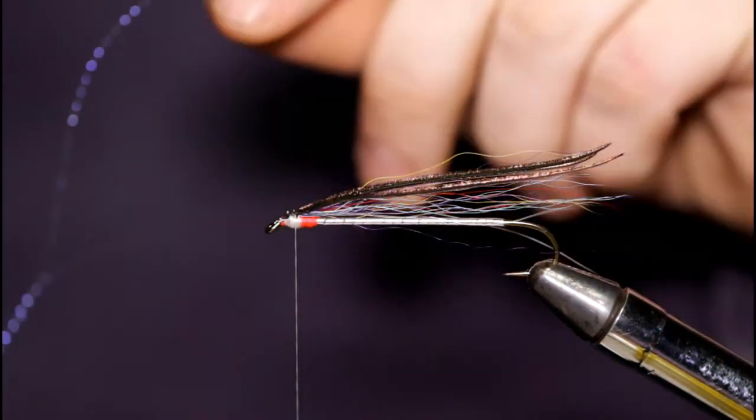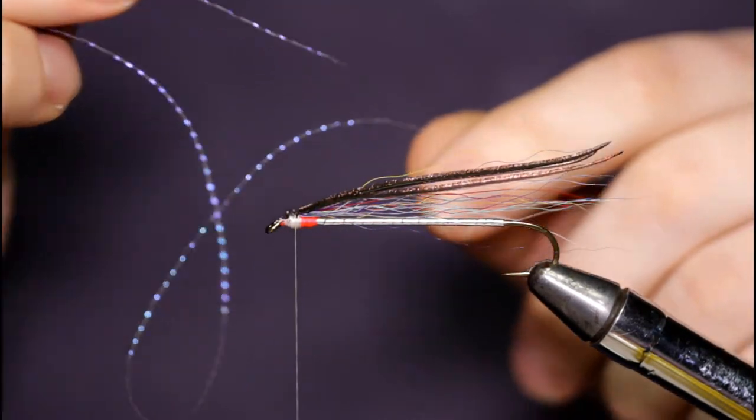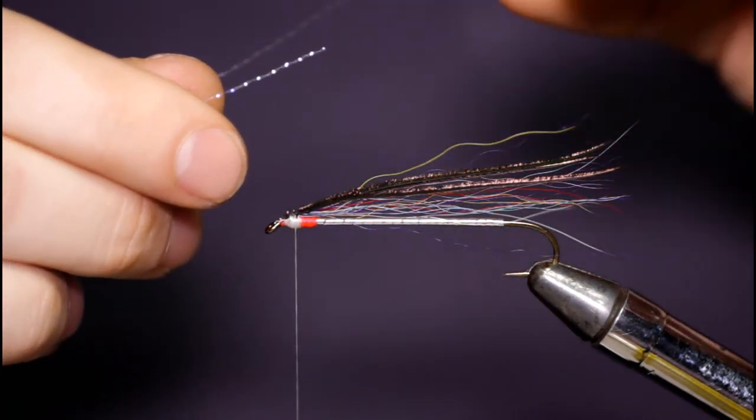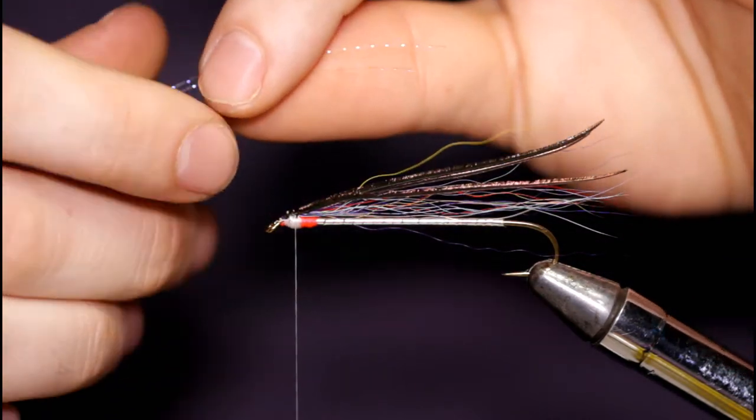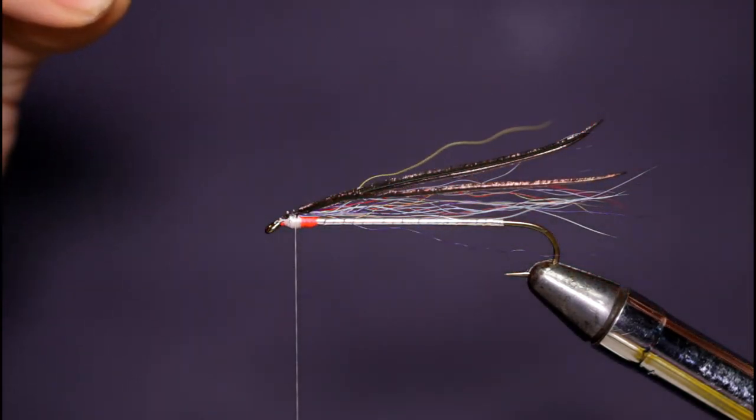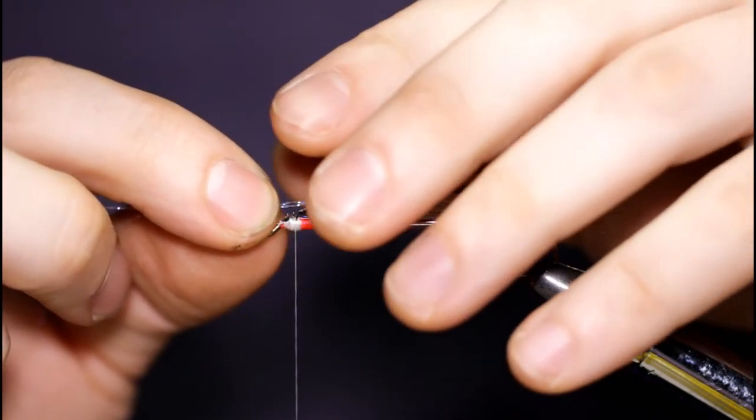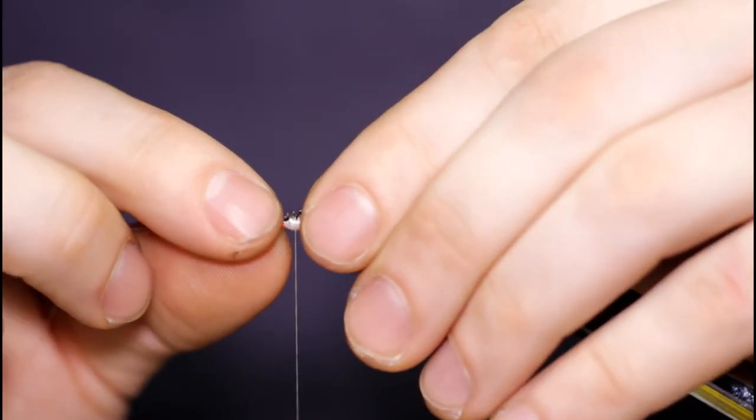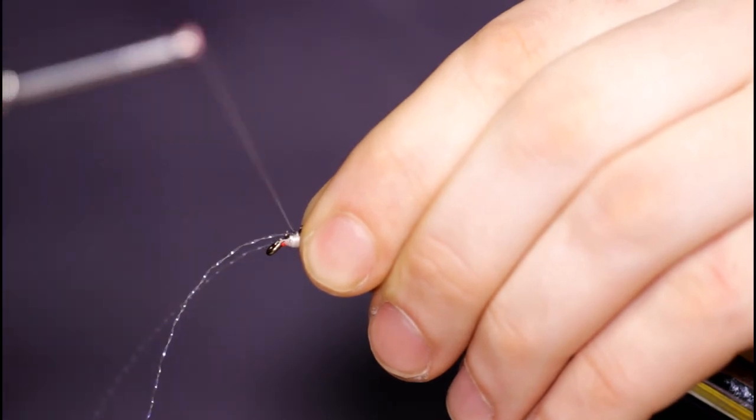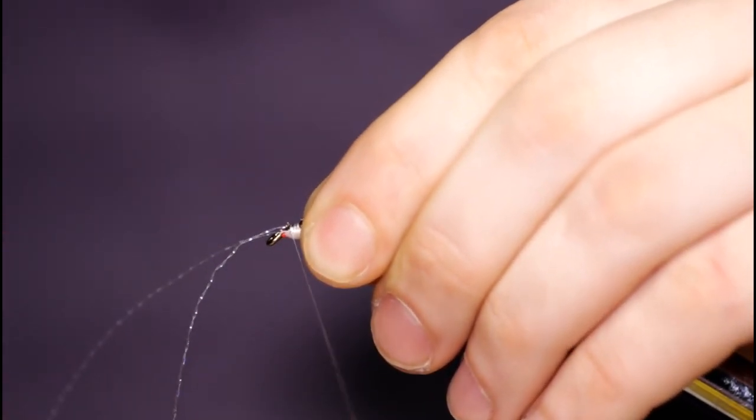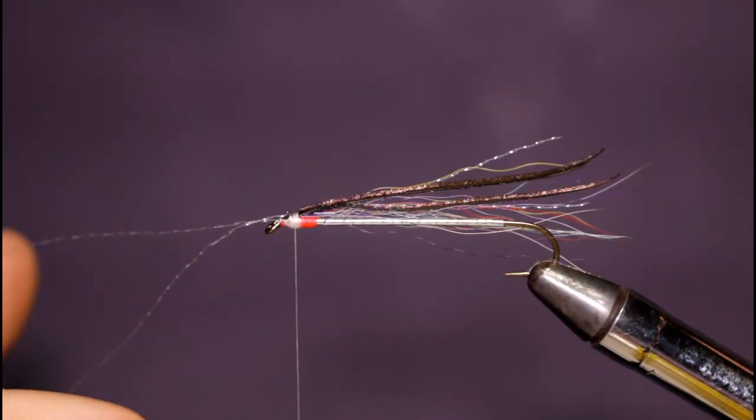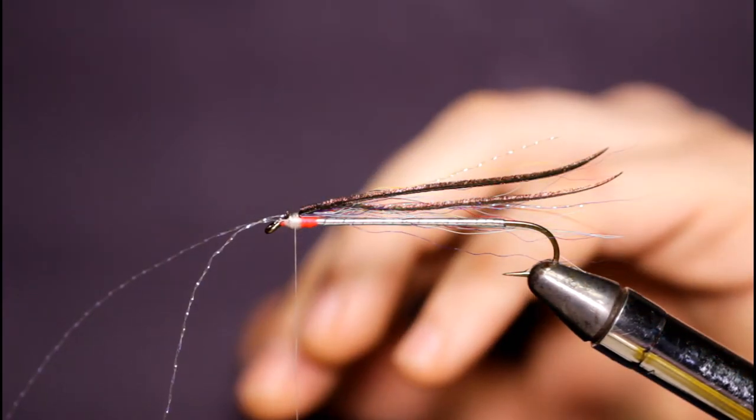This pattern calls for two strands of crystal flash, so I have a single strand in my hand. I'm going to line up the butt ends here. Once I've got them nice and even, I'll tie this on on the side not on the top. Just set this on the side here, take some wraps forward, and then bring the thread right back to where I started.